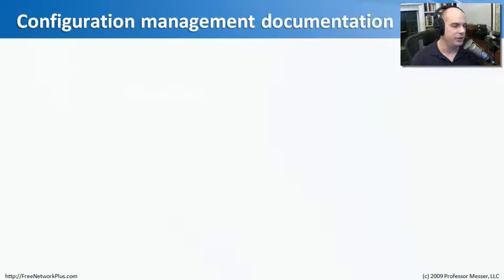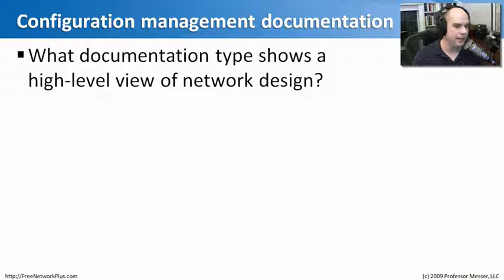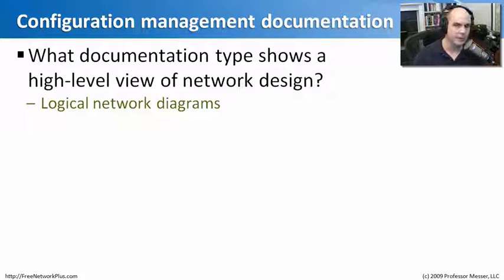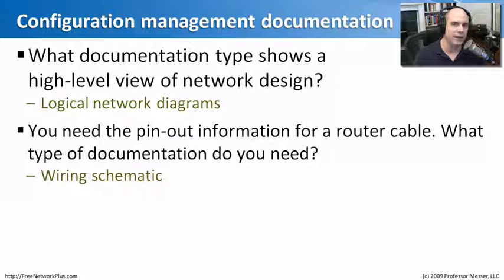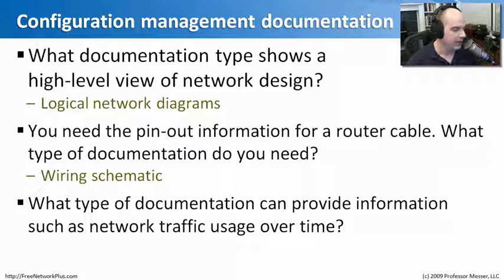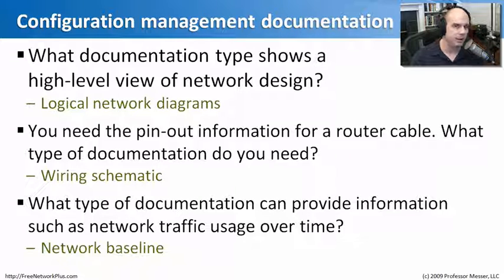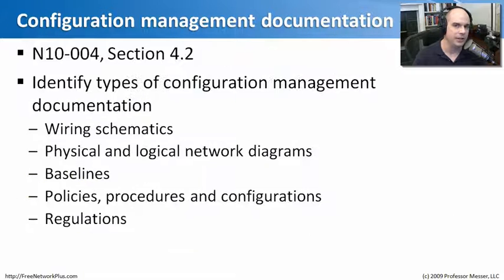Let's review what we've learned about configuration management documentation. First: what documentation type shows a high-level view of network design? That would be a logical network diagram — very high level, doesn't give a lot of details, but helps in planning. Second: you need pinout information for a router cable — what documentation type do you need? That would be a wiring schematic, so you know exactly how that router cable is configured. Third: what type of documentation can provide information such as network traffic usage over time? That would be a network baseline, which lets you understand how network traffic usage has changed from six months ago until now.